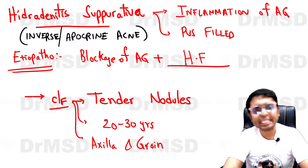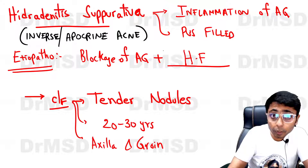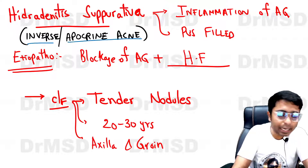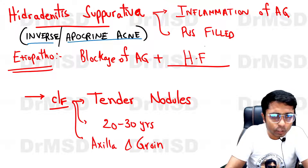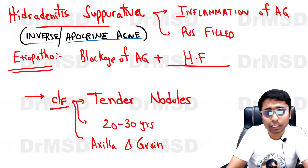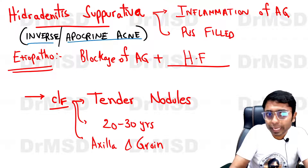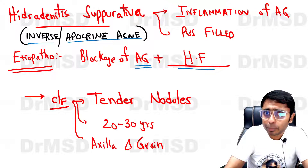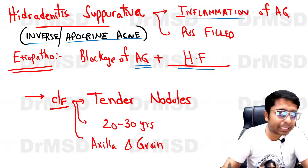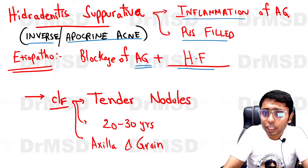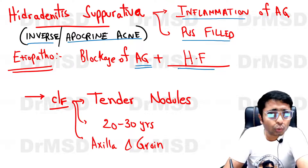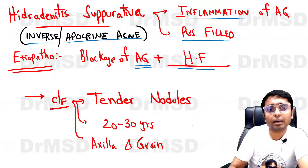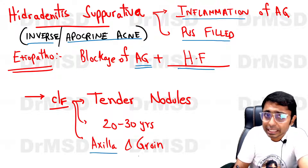So let us quickly see a few important points about Hidradenitis Suppurativa. First, what are the other names? It is also called inverse acne or apocrine acne. The basic etiopathogenesis is there is going to be a blockage of the apocrine glands along with the hair follicles, and there is going to be inflammation seen in this apocrine gland, which can be clinically observed to be pus-filled lesions. What are the sites where lesions can be seen in this condition?